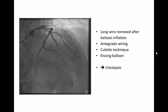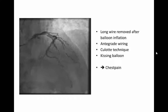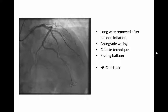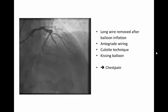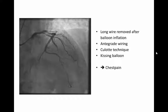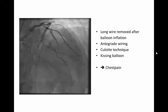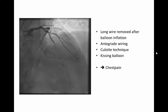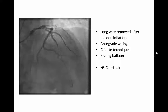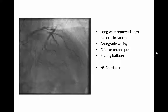After externalization, because this is a bifurcation and I don't want to jail the anterograde wiring from the proximal to the diagonal, I exchange the wire and place two wires — in the proximal LAD and in the LAD, and in the proximal LAD and in the diagonal. After a proximal optimization technique, stent implantation, and a kissing balloon, you can see the result.